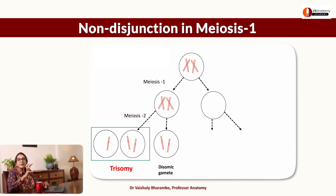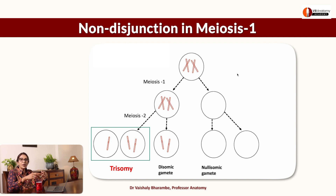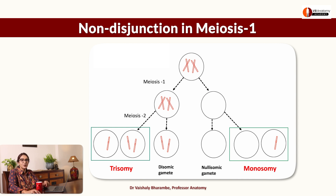Meanwhile, the empty cell — which has got none of the chromosomes of that pair — divides, giving rise to nullisomic gametes. For example, if both X chromosomes went to one side, the other cell has no X chromosome, giving rise to gametes with no X. When they fuse with a normal gamete carrying X, the progeny has only one X — this is how monosomy is produced. This is how trisomies and monosomies arise from non-disjunction in meiosis 1.